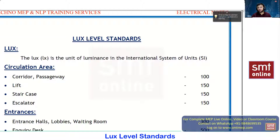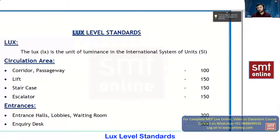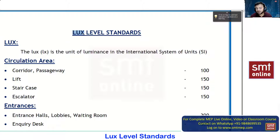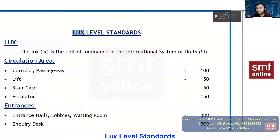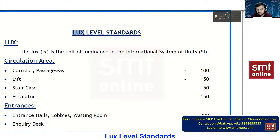Next you can see we have the lux level. Lux is the amount of brightness required in a room. For example, in a classroom you need a specific amount of brightness to work effectively. The minimum required here is 300 lux. With at least 300 lux, the presentation will be good, you'll stay engaged, and you won't experience any eye flicker.